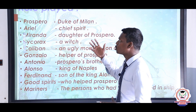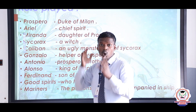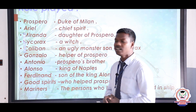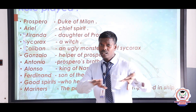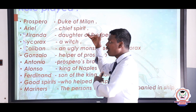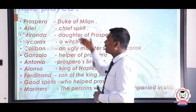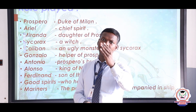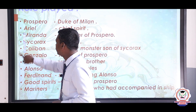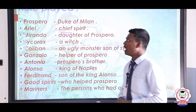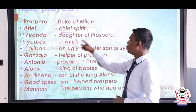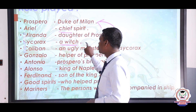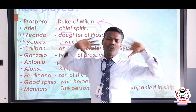Before knowing the story, we must have a good idea of the roles played by different characters. The first character is Prospero, who is the Duke of Milan — he is the central character. Ariel is the chief spirit of all good spirits — note the spelling: C-H-I-E-F. Miranda is the daughter of Prospero. Sycorax is a witch.